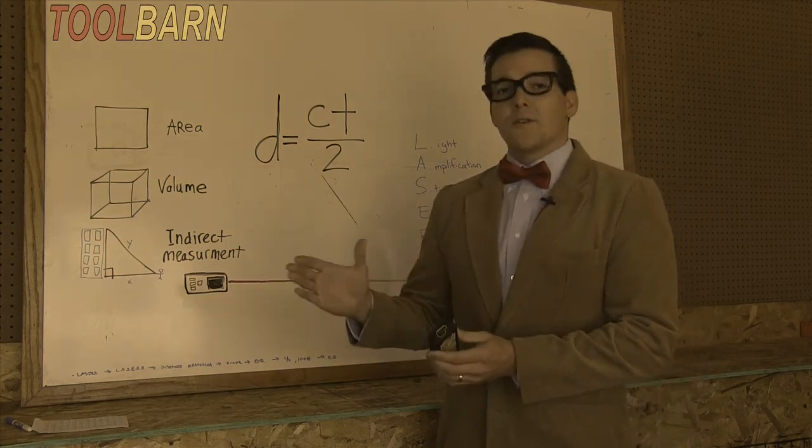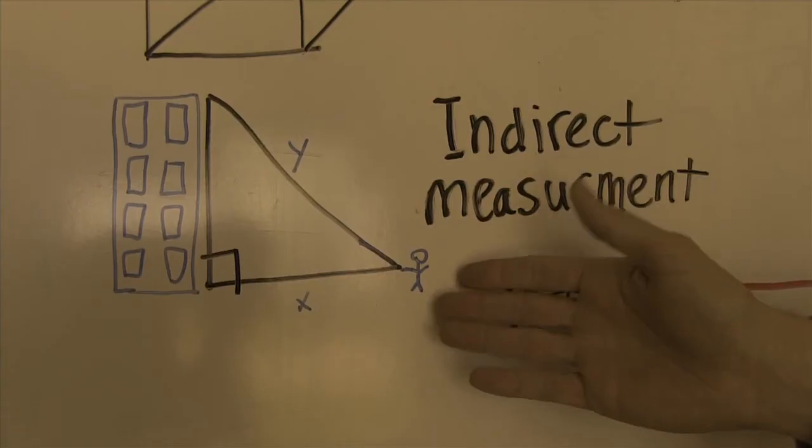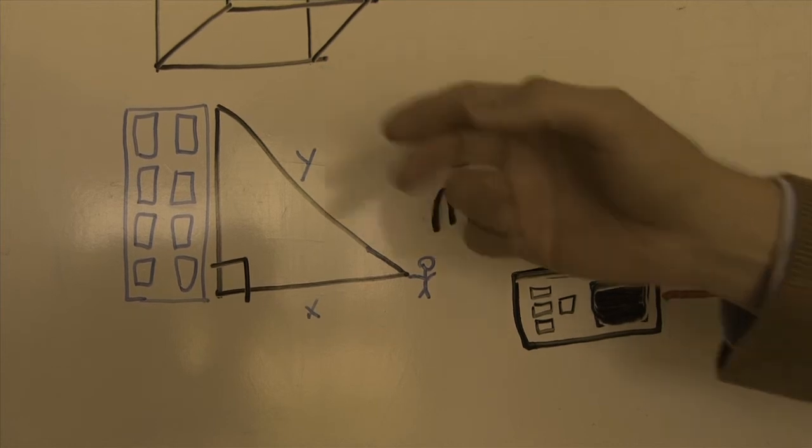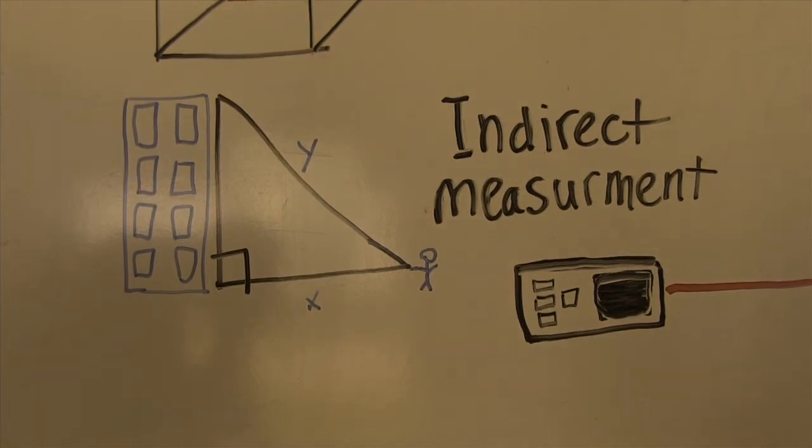It also helps measure other things, for instance, the area, the volume, or an indirect measurement. For instance, from where you're standing, if you know the distance to an object and maybe the distance to the height of that object, but you'd like to know the height of that object itself, that's where this tool would come in handy.